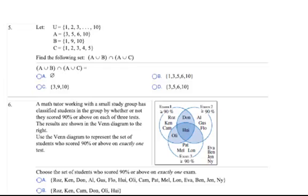For number five, let U equal the numbers one through ten. That's the universal set. A is three, five, six, ten. B is one, nine, ten. And C is one, two, three, four, five. We need to find the following set. We want to find the intersection of A union B and A union C. So first, let's find A union B.